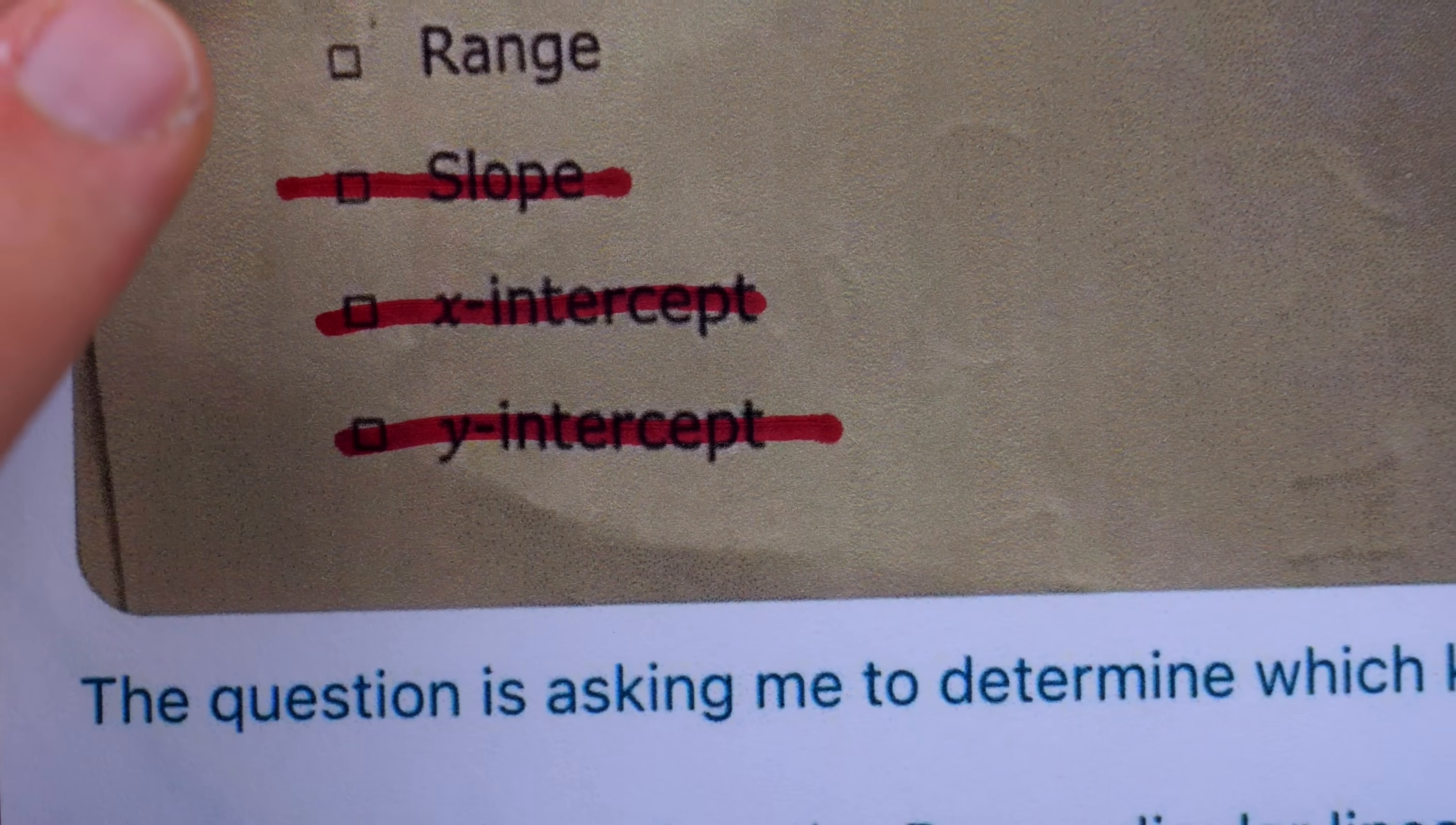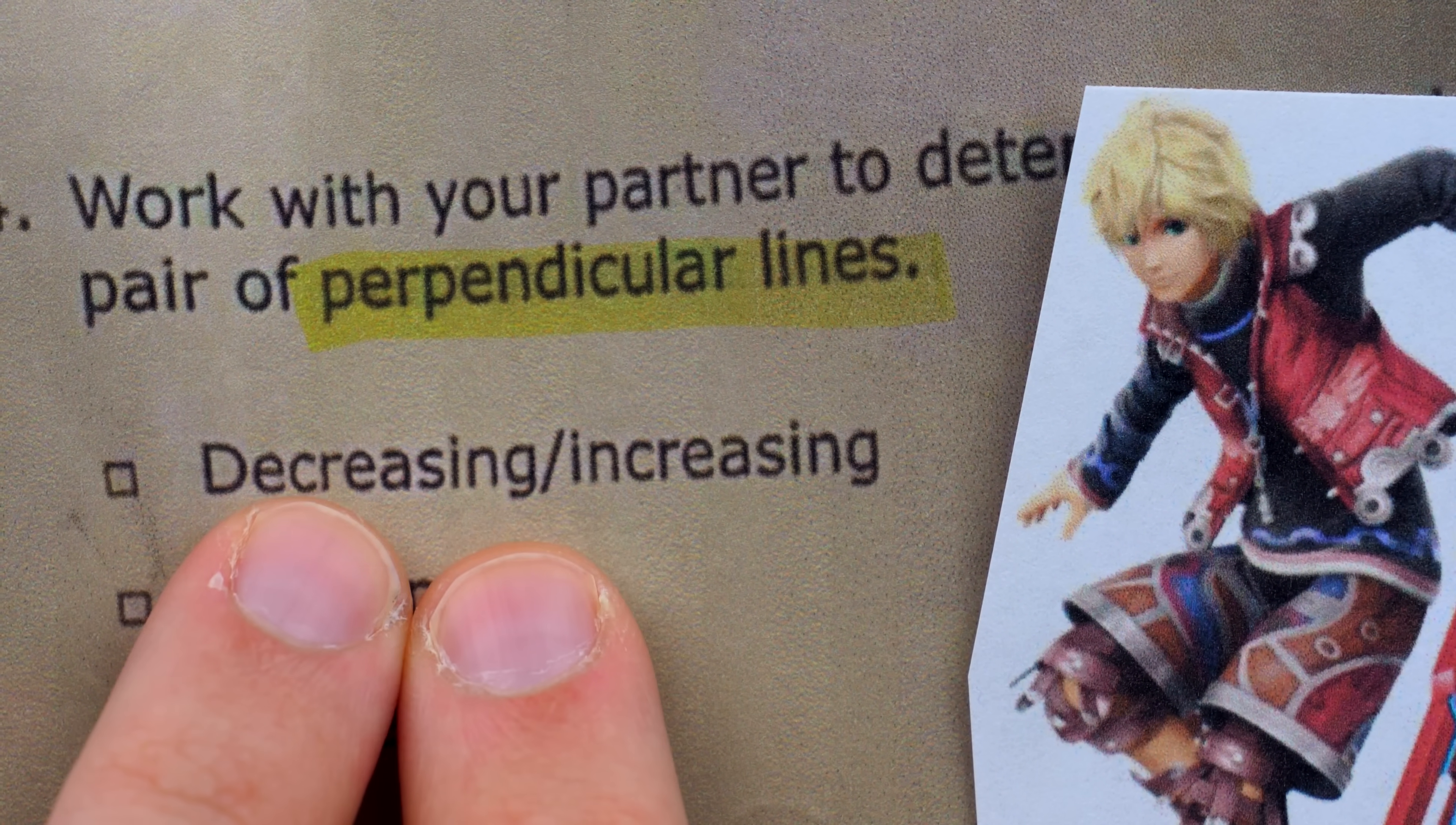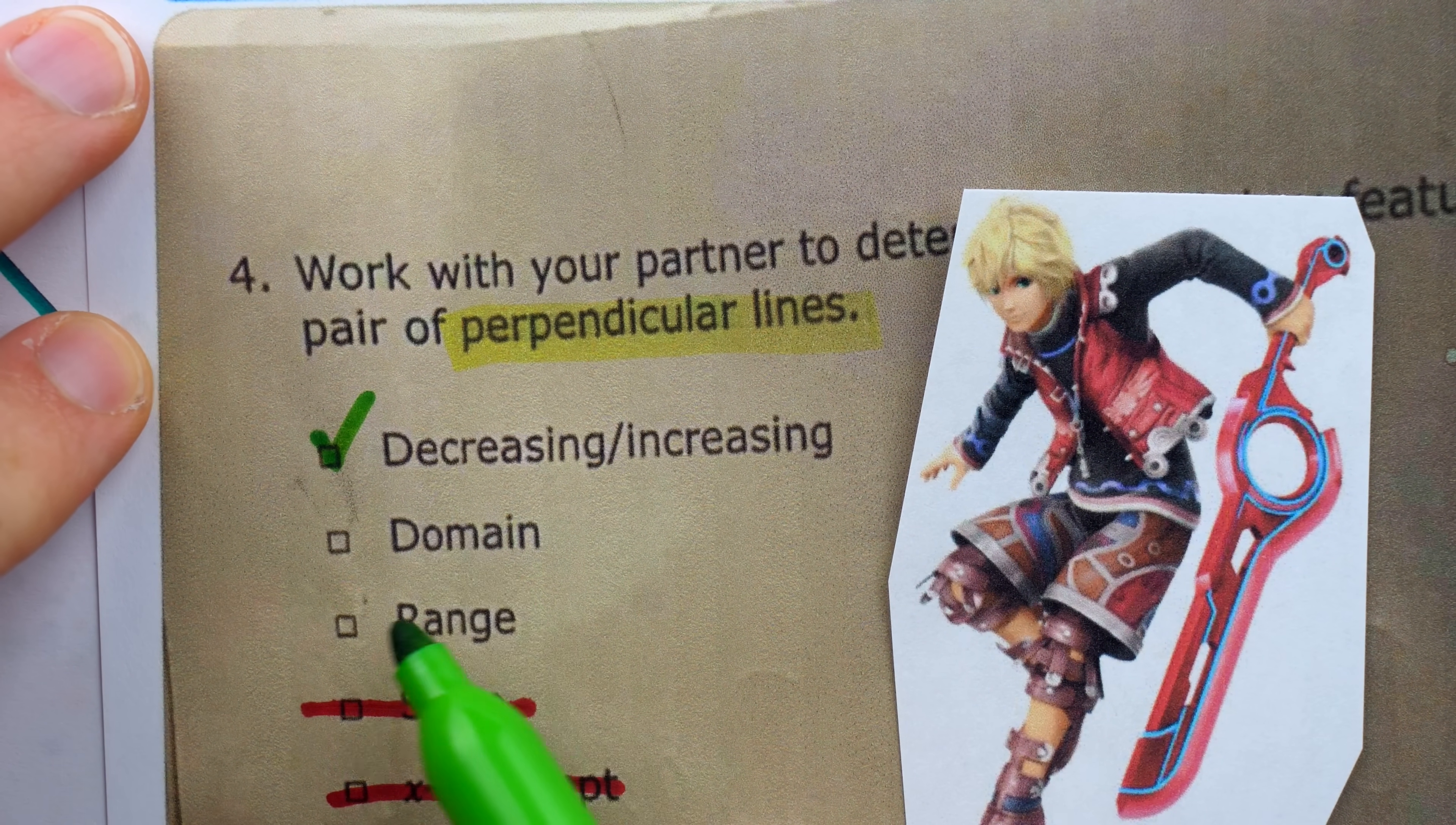There is a potential alternative interpretation of this option, however. These two options down here, x and y-intercepts, were separate. They weren't smushed together with a forward slash between them. Since these two options are smushed together with a forward slash between them, maybe we're supposed to regard this option as perpendicular line pairs will be one decreasing and one increasing. In that case, we would mark this true. I'm going to call it true and move on to these last two.